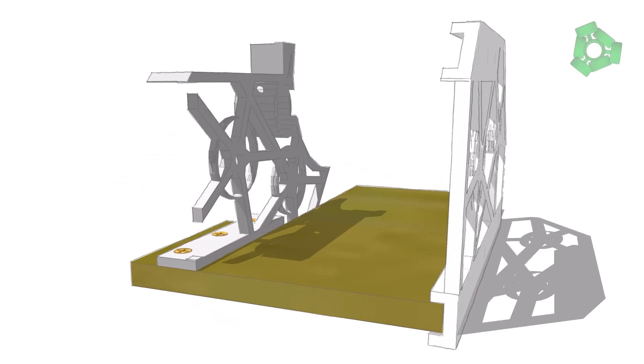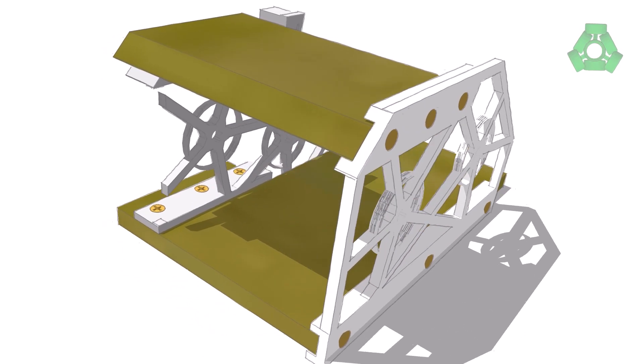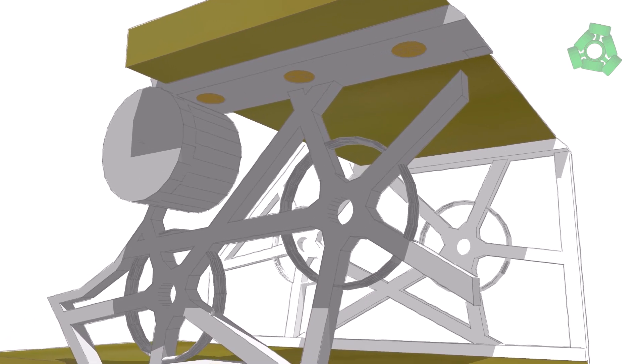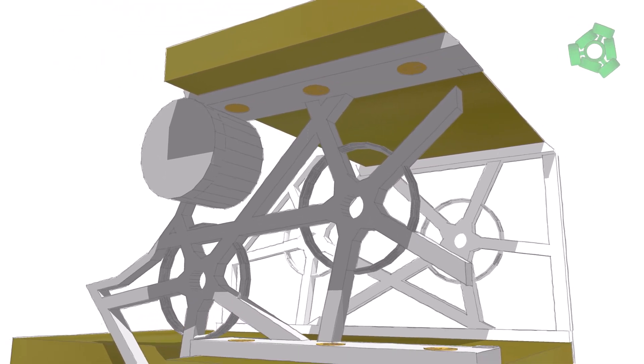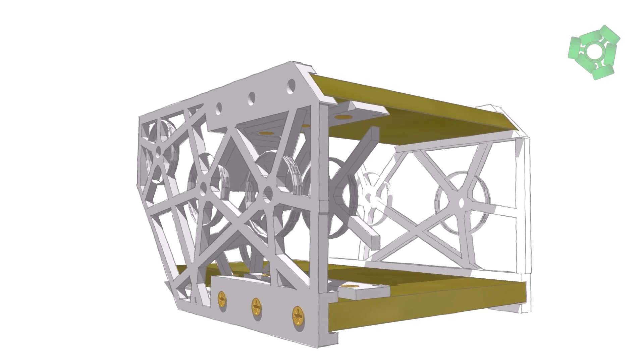Screw the right frame section to the larger board. Slide the smaller board into the groove of the right frame and screw it into place. Now screw the central frame to the smaller board. Fit the left frame section onto the boards and screw them together.